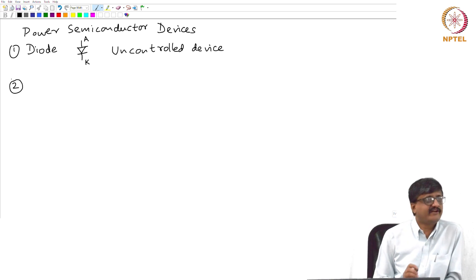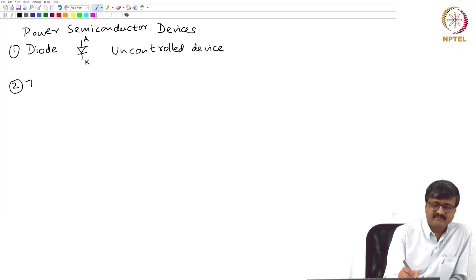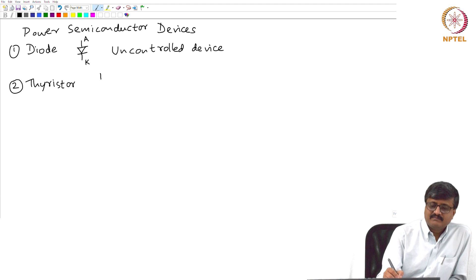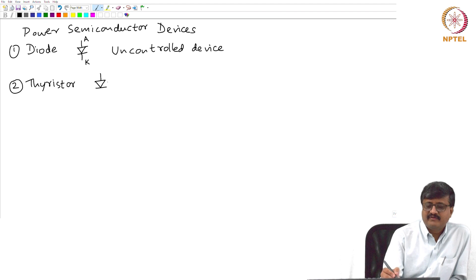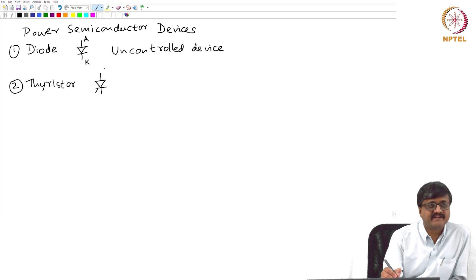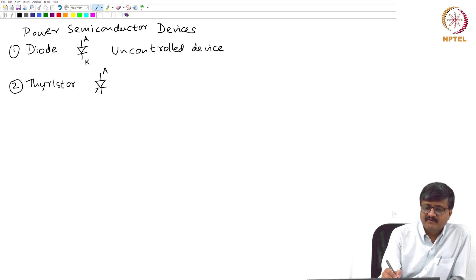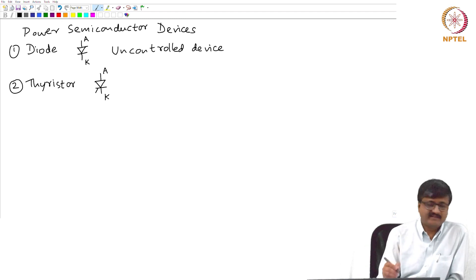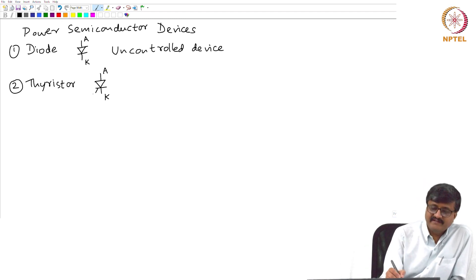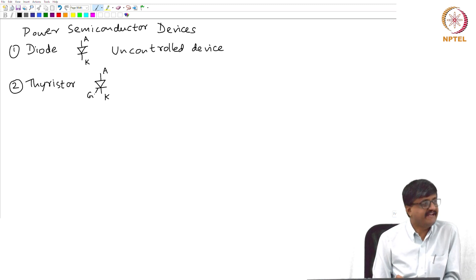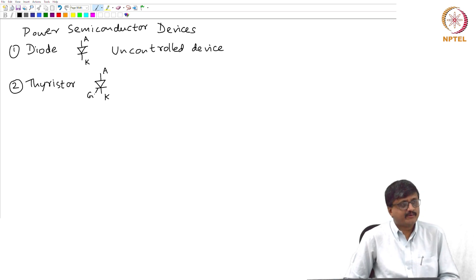The next category of power semiconductor devices is thyristor. The symbol is similar to that of a diode except for a minor addition, and there is an additional terminal as well. I have the anode and cathode terminals which are present in the diode, and there is an additional gate terminal G. Anode and cathode are power terminals, whereas G is the control terminal.